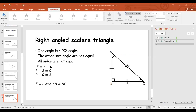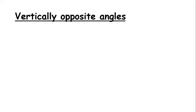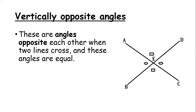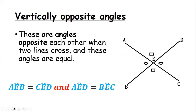Properties of straight lines — vertically opposite angles. Let's look at what these are. Vertically opposite angles are angles opposite each other when two lines cross, and these angles are equal. So when we've got two lines crossing like that, we can see here — putting some lines to demarcate those — we've got this angle here is equal to this angle here. Those are vertically opposite angles.